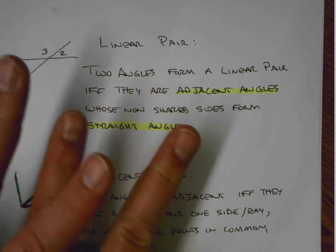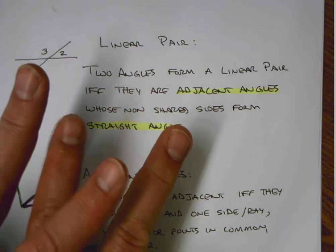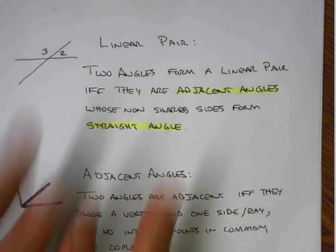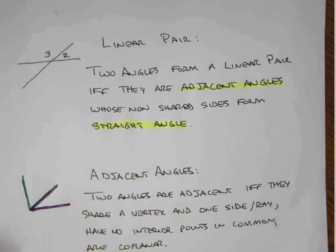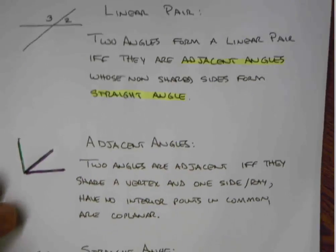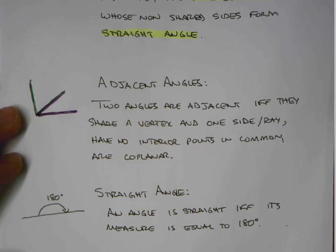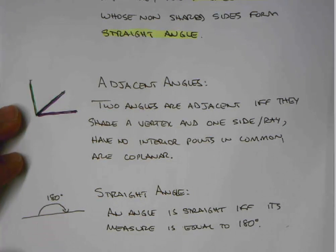In other words, they cannot be overlapping — they have to stop at the ray they share. And a straight angle, of course, is an angle that is straight if and only if its measure is equal to 180 degrees. It makes a line.